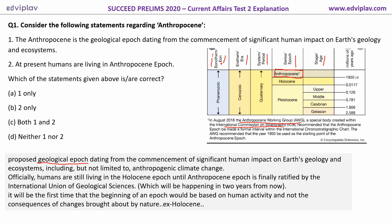The Anthropocene epoch marks the commencement of significant human impact on Earth's geology and ecosystems. Based on the human impact on Earth's ecology, this separate category and segment has been proposed — that is the Anthropocene epoch.